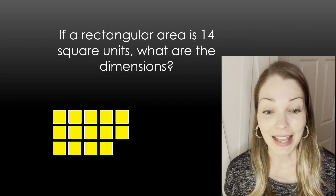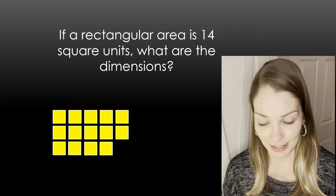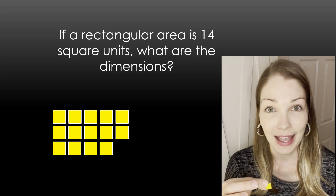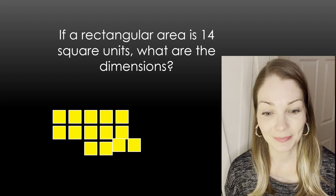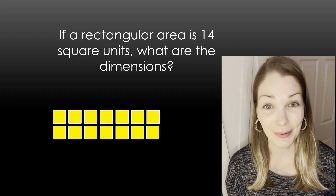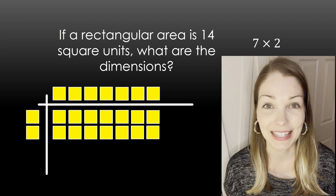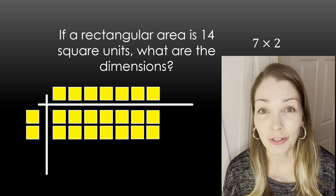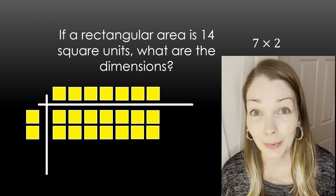If a rectangular area is 14 square units, what are the dimensions? You can use your algebra tiles and play with this and try to make a rectangle. We can see here we made a rectangle, and when we find the dimensions we can see that there's 7 and 2. That's the idea we're going to use when we try to factor polynomials — we're just trying to make a rectangle.